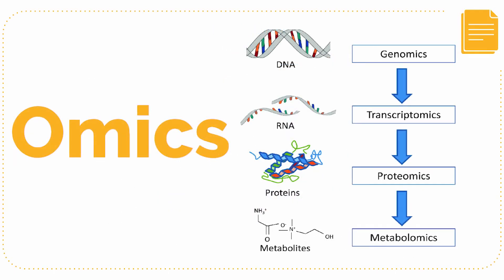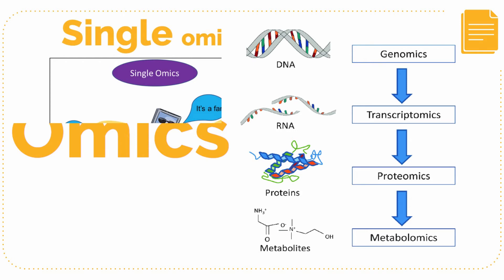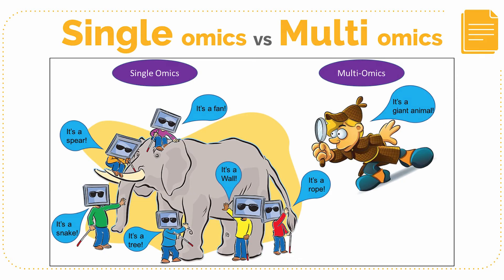Omics can be referred to as the study of large sets of biological molecules, which provides a collective characterization of pools that can be translated into the structure, function, or dynamics of an organism. According to the image, every character around the elephant represents different types of omics data, as each of them describes that creature in their own way of observing it. The same goes for cancer, where analysis of single omics only provides insight towards a specific portion.